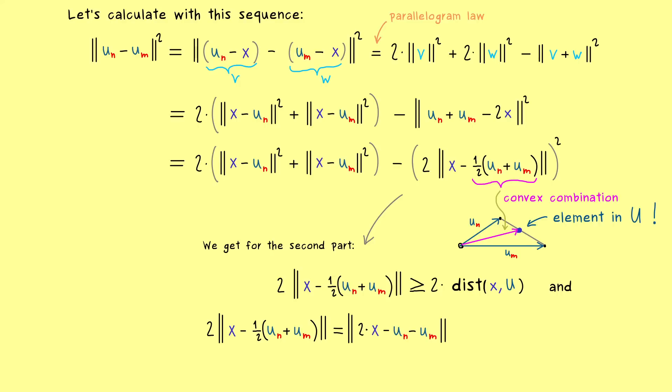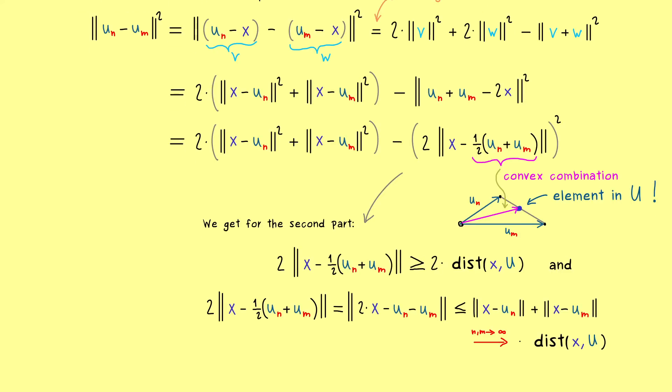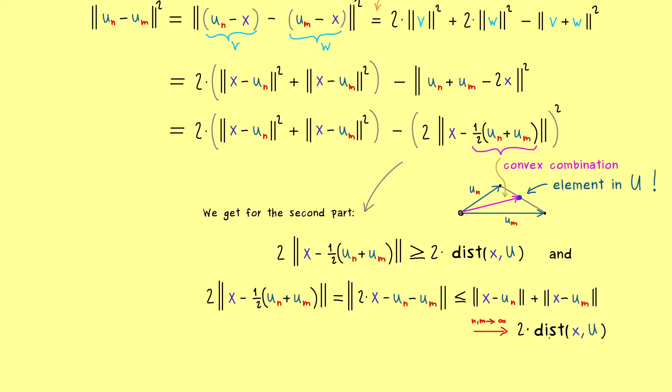And to show this let's pull in the factor 2 again. And then we can use our triangle inequality to analyze the two parts separately. So first we have x minus u_n and second we have x minus u_m. And by assumption we already know these limits because this is how we have chosen our sequence. Namely for n and m to infinity we have the distance x to U here and there. In other words in the limit we also have the distance 2 times.